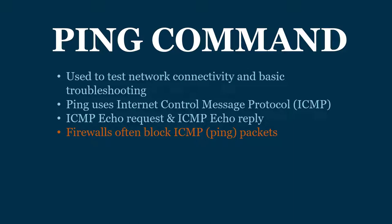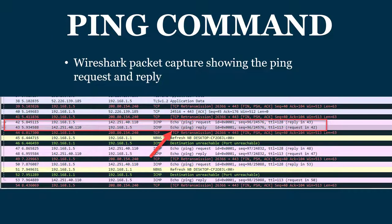Here's a screenshot of Wireshark. This computer at 192.168.1.5 is sending a ping request to a 142 address. Here's the ICMP echo request packet, and then that remote computer at the 142 address responds to 192.168.1.5 with an ICMP echo reply. That's what a ping looks like in the background.